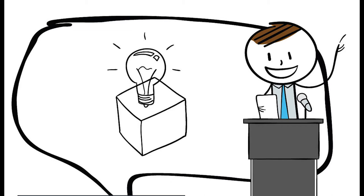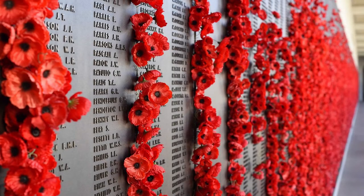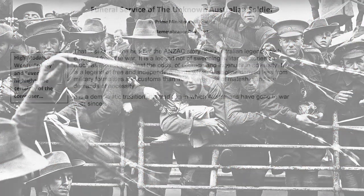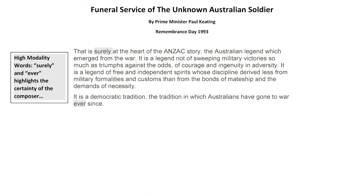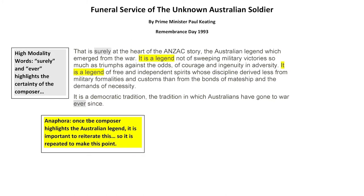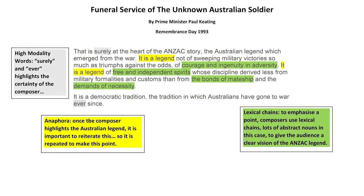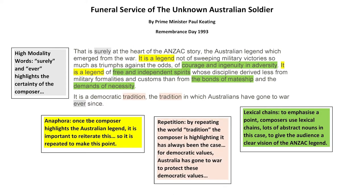Let's look at the paragraph where the speaker highlights the ANZAC story and the Australian legend. The high modality words 'surely' and 'ever' point out that the unknown soldier definitely captures both the ANZAC story and the Australian legend. Techniques such as anaphora of 'it is a legend' reinforce this. To build up an idea, composers use lexical chains — groups of words to build it up. In a persuasive speech, the composer uses many abstract nouns like courage, mateship, and spirit to clearly illustrate how the unknown soldier is representative of the ANZAC and Australian image. The repetition of the word 'tradition' reinforces that it is these Australian ideals that soldiers take to war.